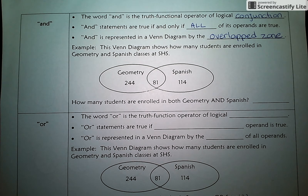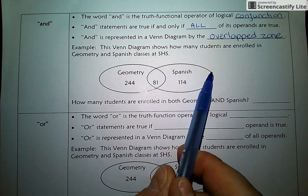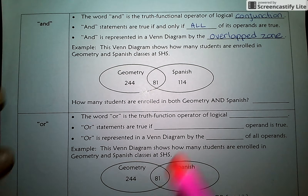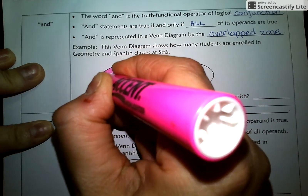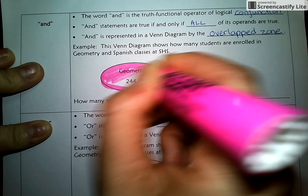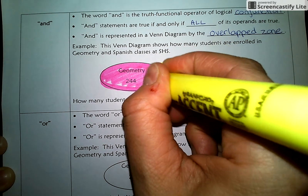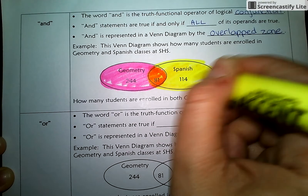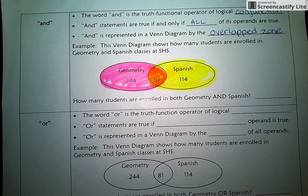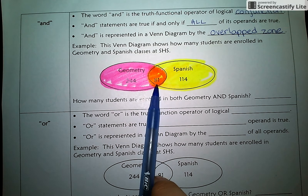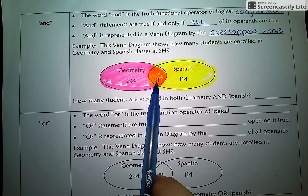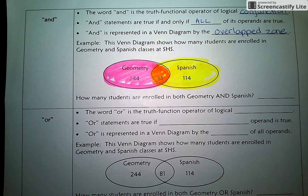Let's check out this example. This Venn Diagram shows how many students are enrolled in Geometry and Spanish classes at SHS. The bubble on the left represents the Geometry students; the bubble on the right represents the Spanish students. I'll highlight the Geometry bubble pink and the Spanish bubble yellow. There's a very special zone represented by what's turned orange — this zone represents students who have taken Geometry and Spanish. How many students are enrolled in both classes? 81.